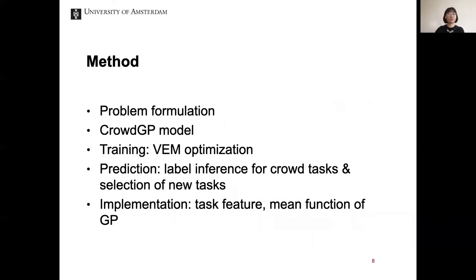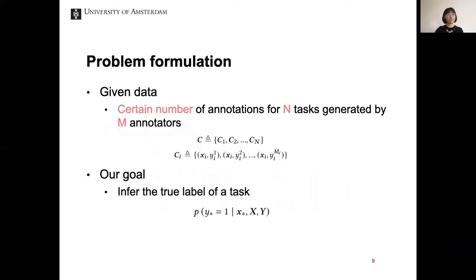I will formally formulate the problem and introduce the CrowdGP model, the training method, prediction, and two important implementation details: task feature and mean function of GP. Given a number of annotations for n tasks generated by m annotators, denoted by C, our goal is to infer the true label of a task — the probability p(y* = 1) conditioned on x*, X, and the crowd labels Y.